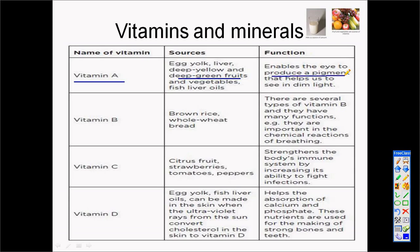Vitamin B is found in brown rice and whole wheat bread. Vitamin B is actually one of the vitamins that helps our body to release energy throughout the time when we need it. It is very critical in allowing certain chemical reactions to happen in our body so that we can take up other minerals.